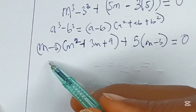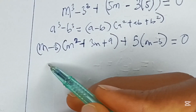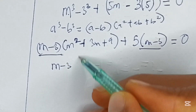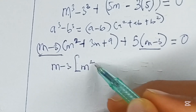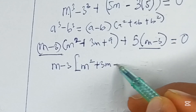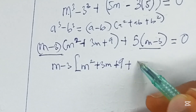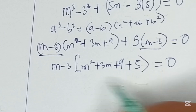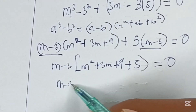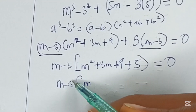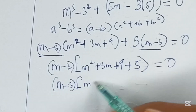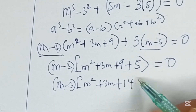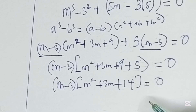Now moving on, we can factorize m minus 3. So we have m minus 3 into m squared plus 3m plus 9 plus 5 is equal to 0. We now have m minus 3 into m squared plus 3m plus 14 is equal to 0.